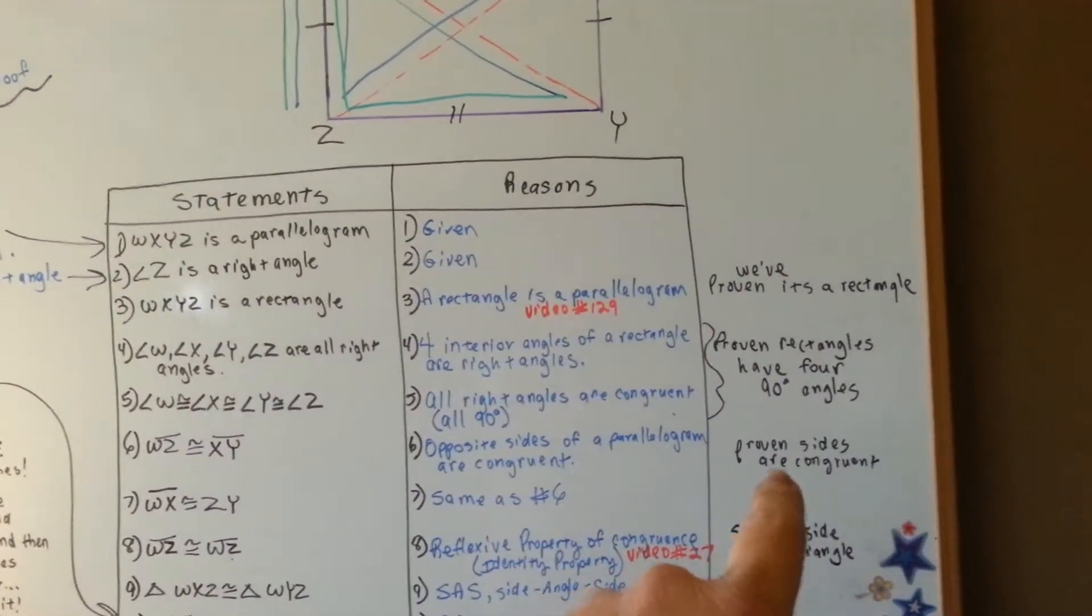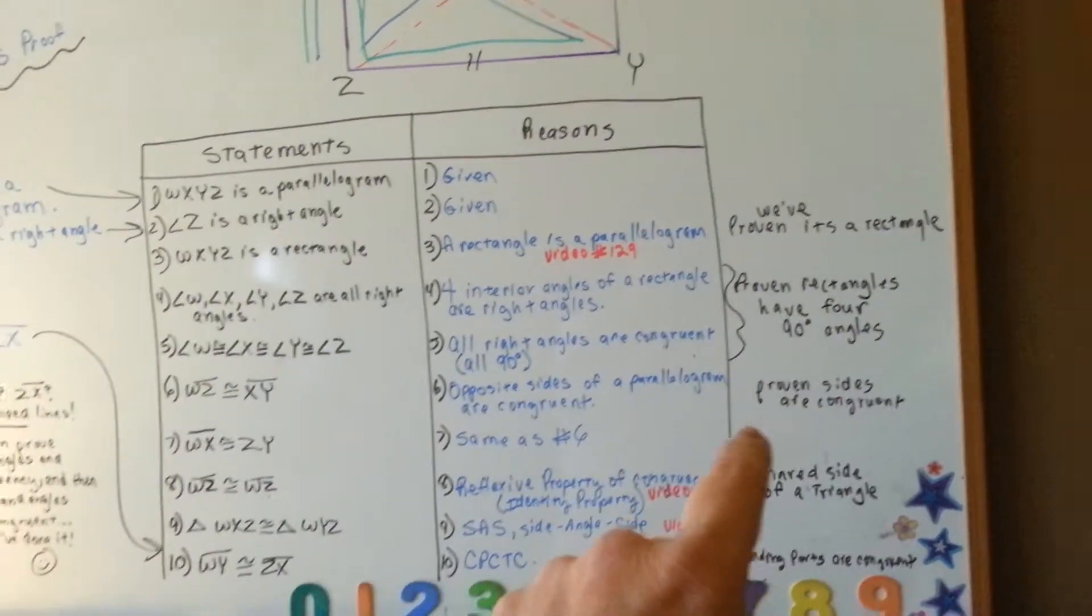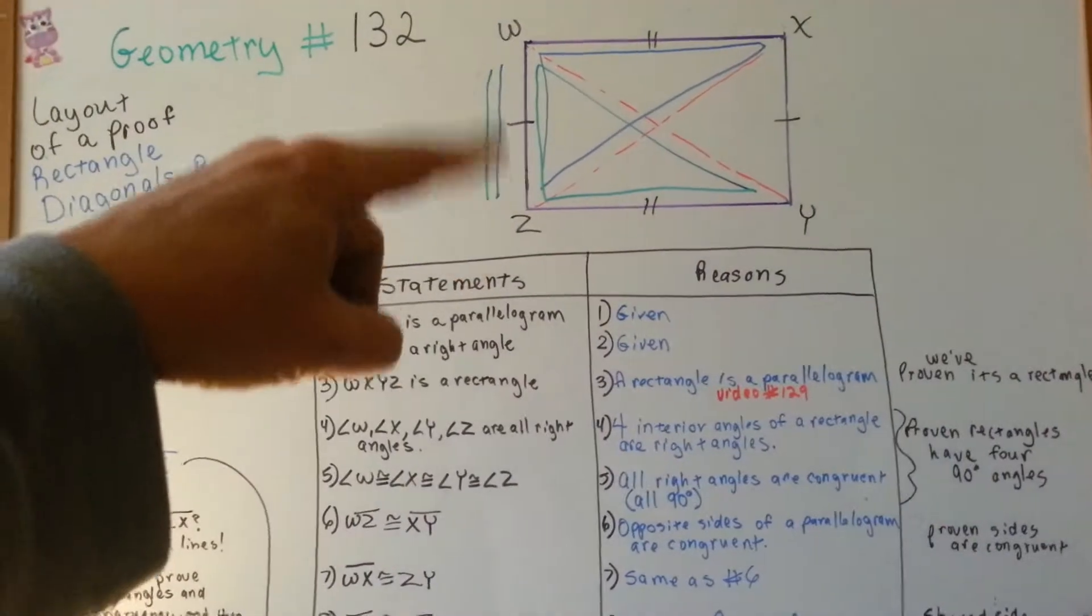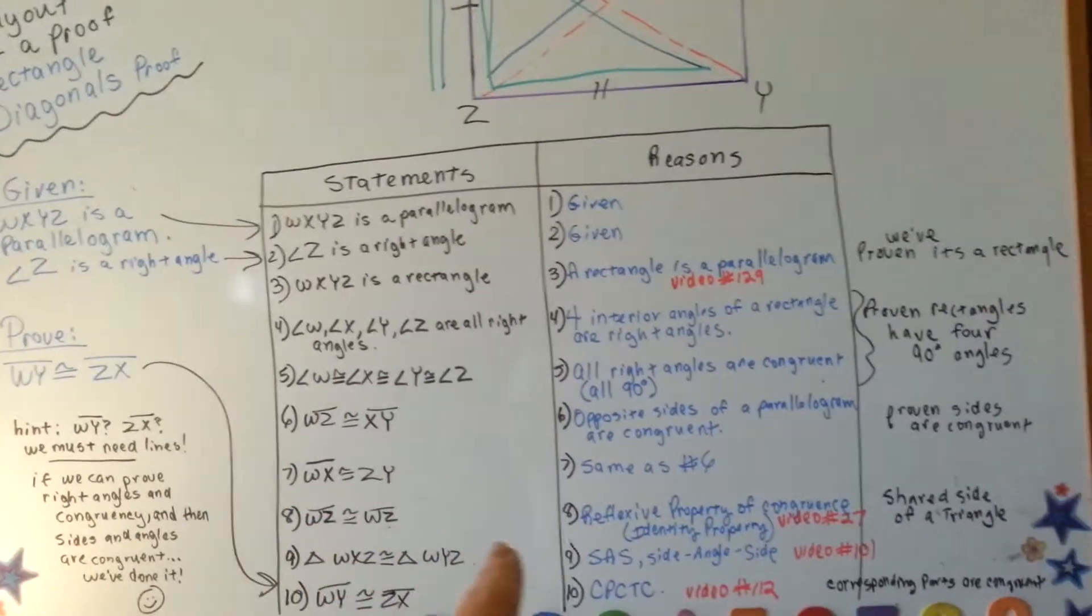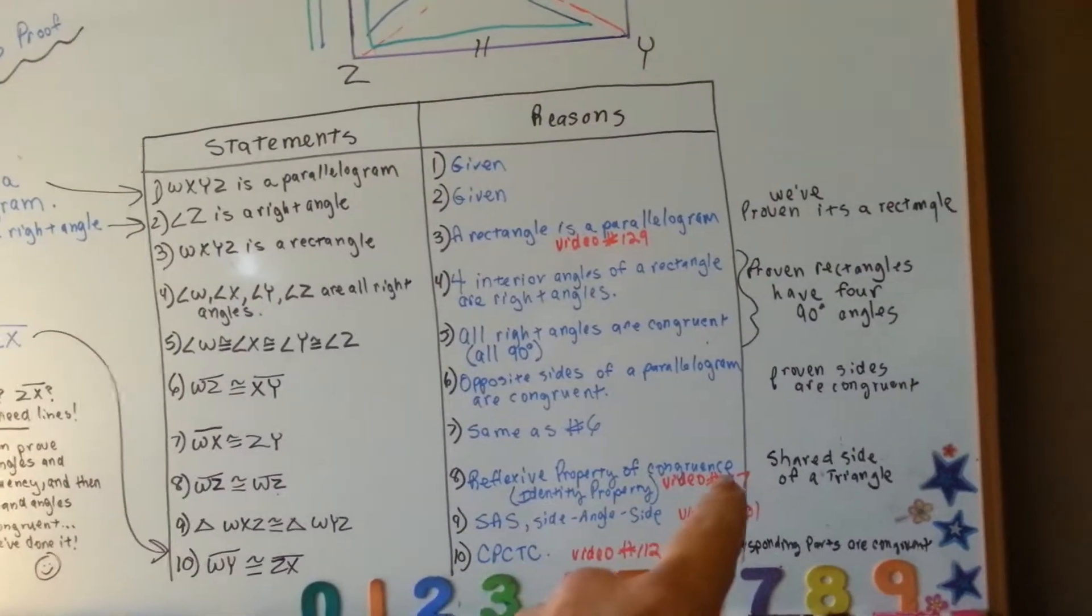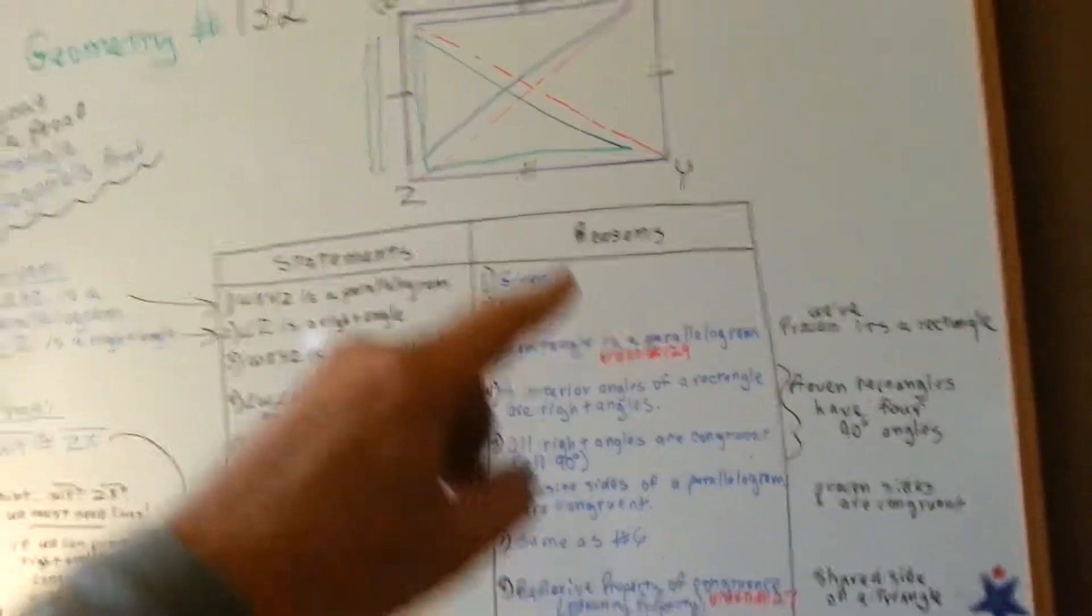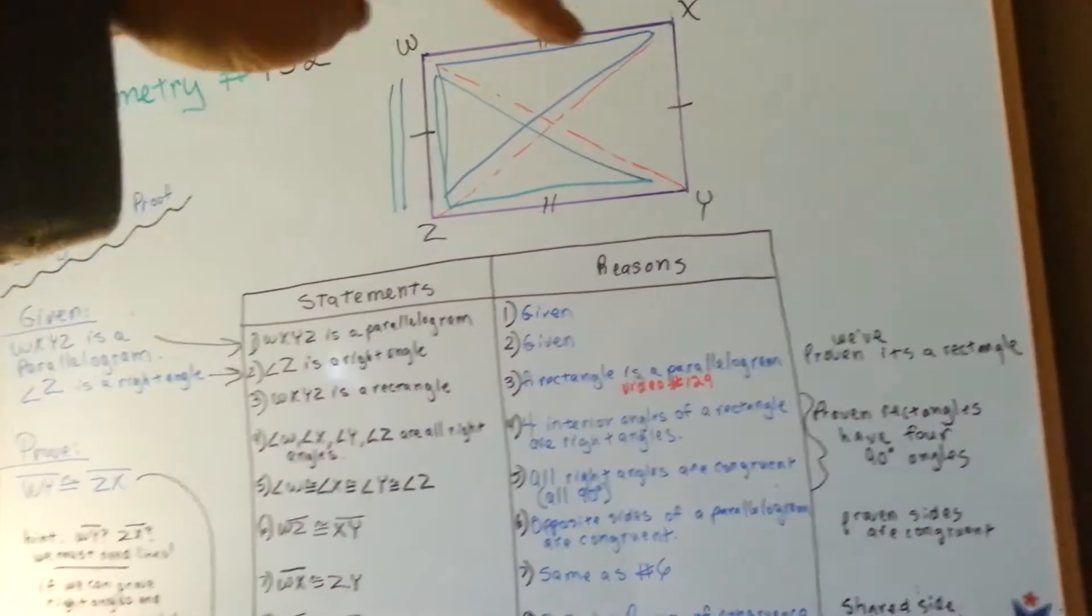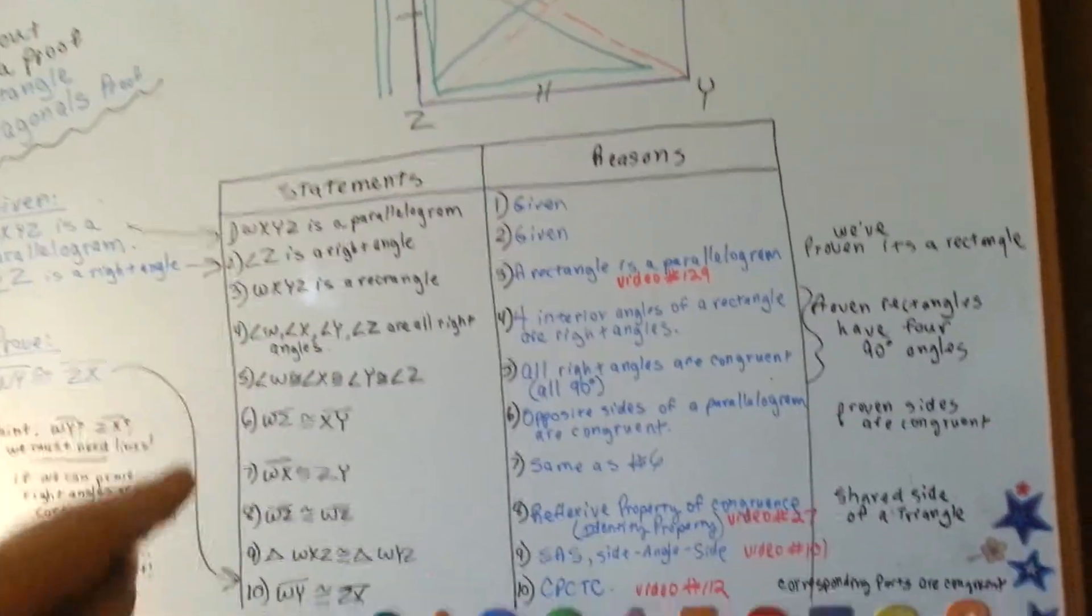So, now we've proven the sides are congruent. We've proven the angles are congruent, and we've proven the sides are congruent. So, we can say that WZ, this one, is congruent to itself, which is the reflexive property, that's in video 27 if you want more information. So, we can say, because it's a shared side of a triangle, see? They're both sharing this. The blue one is sharing it, and the green one is both sharing WZ.